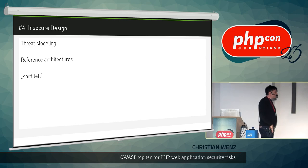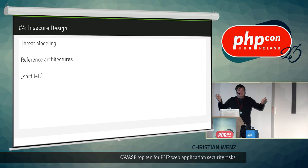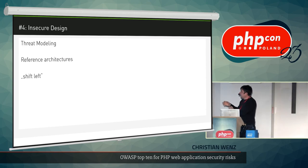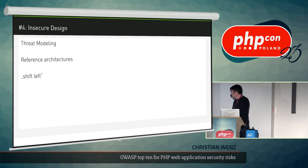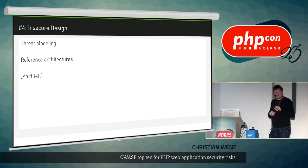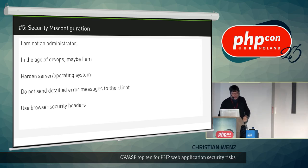Number four is insecure design. I have a problem with this list item because it's not really actionable. The idea — marketing buzzword aside — is to use security as early as possible when creating software: not at the end during testing, but at the beginning during design. But there's nothing specific to demonstrate, so let's move on.